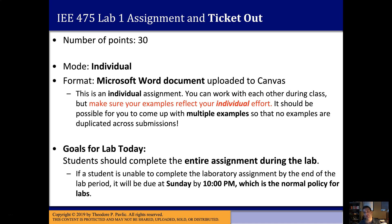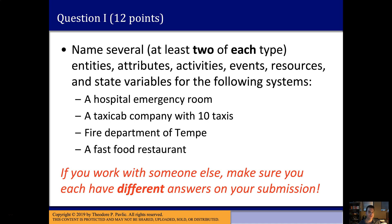The goal during lab is to finish the assignment — you can complete the entire three-part lab in one sitting. If you don't finish, labs are traditionally due Sunday night. Question one: name at least two of each type — entities, attributes, activities, events, resources, and state variables — for four systems: a hospital emergency room, a taxi cab company, a fire department, and a fast food restaurant.